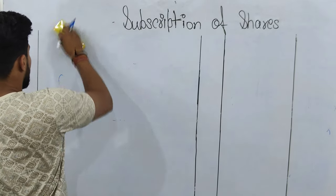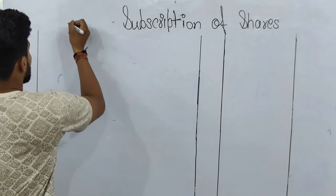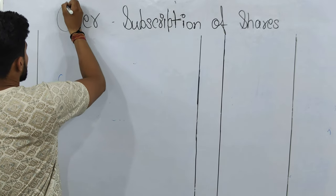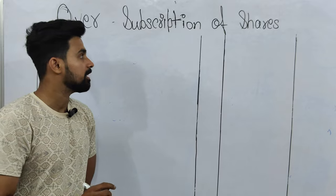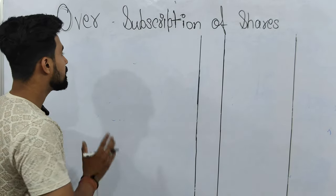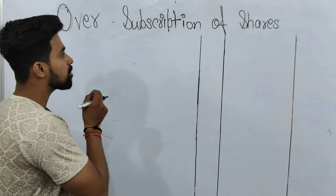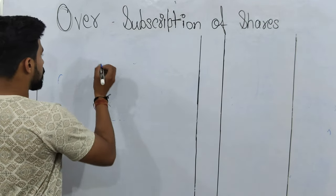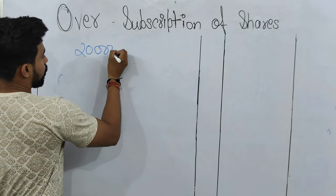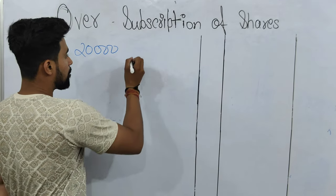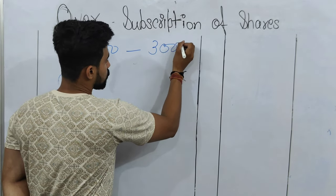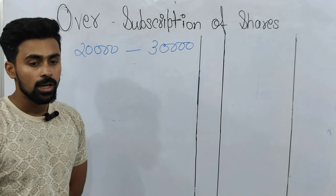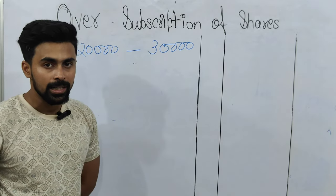Now let's understand the next case — over subscription of shares. Over subscription means sometimes it happens that the number of shares applied by the public is more than the number of shares issued by the company. For example, a company issued 20,000 shares, but the public applied for 30,000 shares. It is not possible to distribute 20,000 shares among 30,000 applicants.